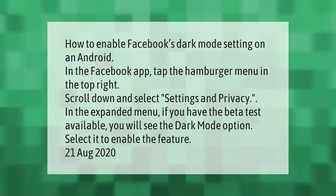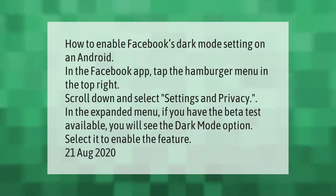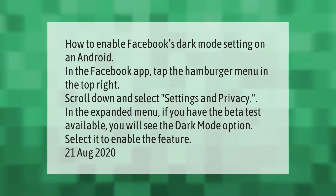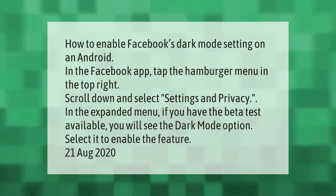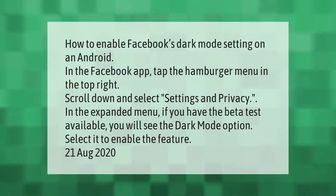To enable Facebook's dark mode setting on Android, in the Facebook app tap the hamburger menu in the top right. Scroll down and select Settings and Privacy. In the expanded menu, if you have the beta test available, you will see the dark mode option — select it to enable the feature.